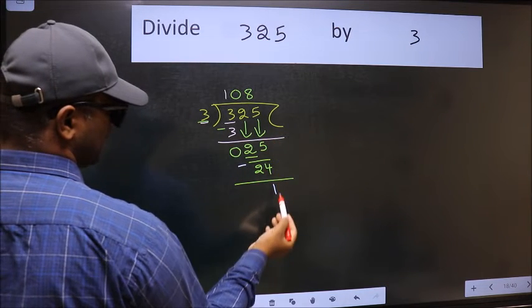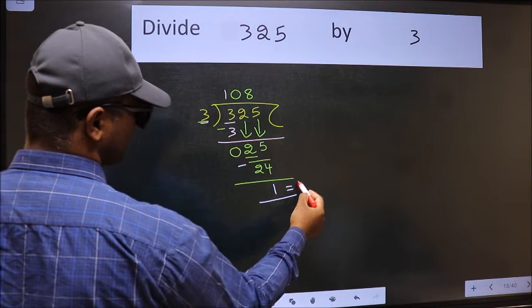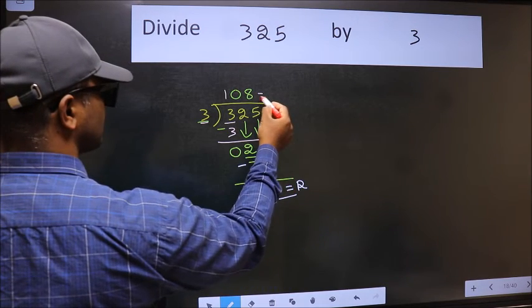No more numbers to bring it down. So we stop here. This is our remainder and this is our quotient.